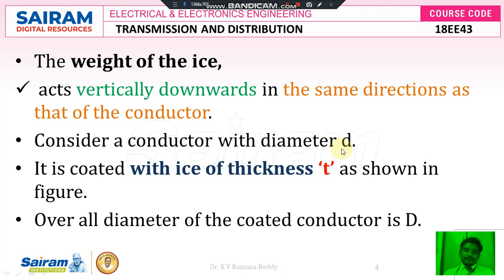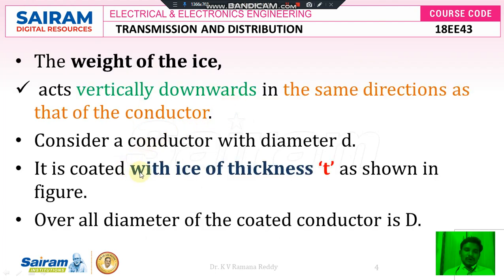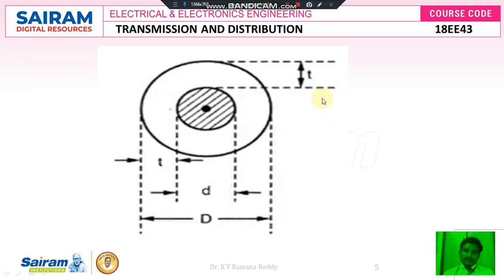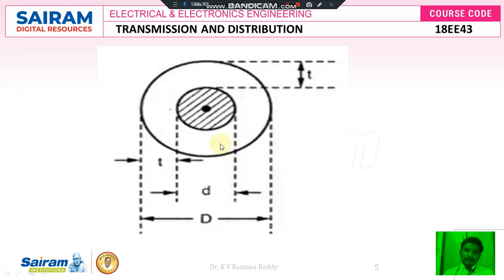Consider a conductor with a diameter d. It is coated with ice of thickness t, as shown in the figure. Here t is the ice layer thickness and d is the original size of the conductor; the conductor size increases due to the ice thickness t. Due to ice coating, the overall diameter of the coated conductor is capital D. Therefore, capital D is equal to d plus t plus t, that is, capital D equals d plus 2t.